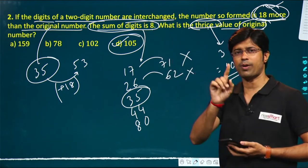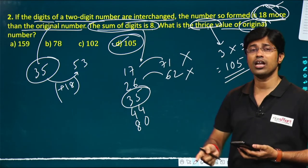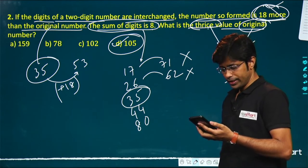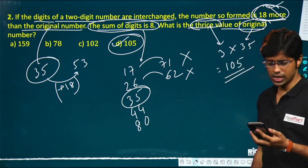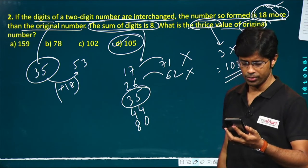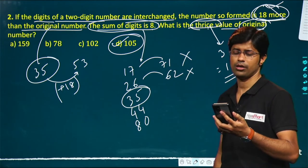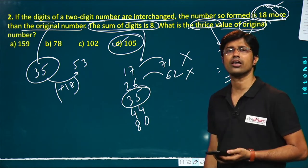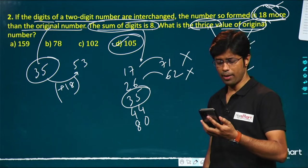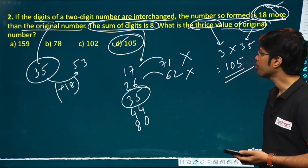The question asks for thrice the value of the original number. So 3 × 35 = 105. Option D, 105, is the answer.